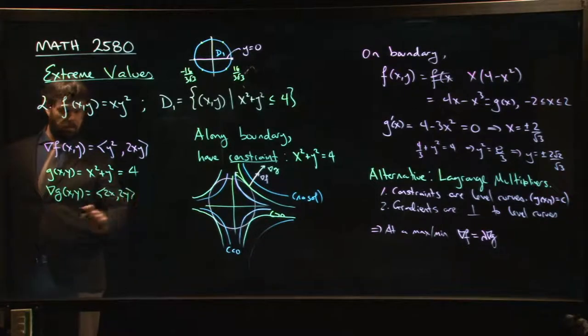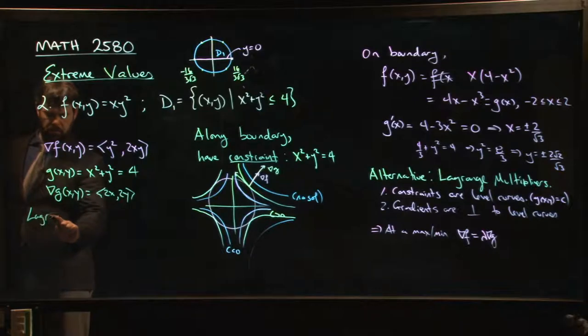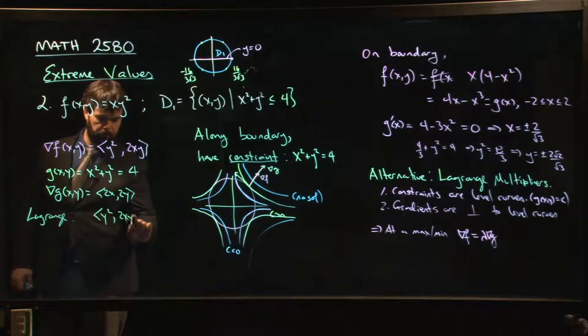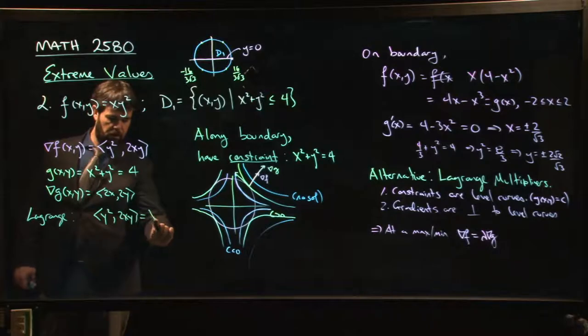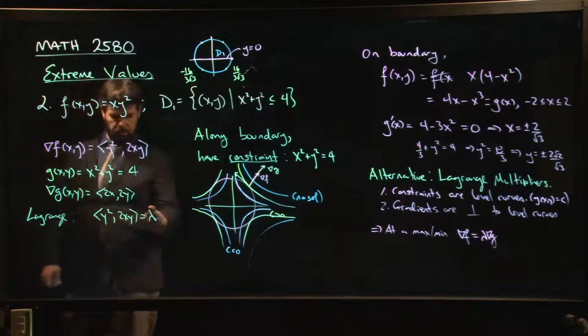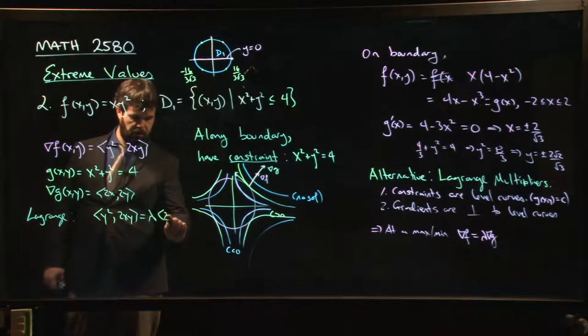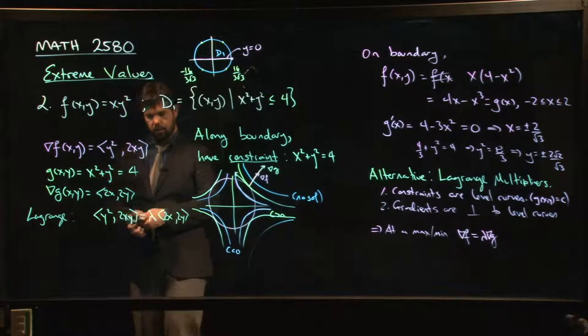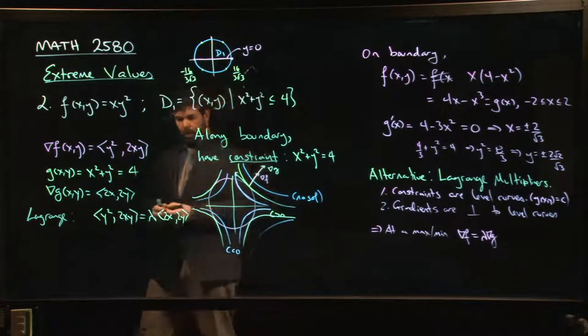So the gradient of g is just 2x, 2y. This Lagrange method says that the gradient of f, so y squared, 2xy, should be a scalar multiple of the gradient of g, so 2x, 2y.